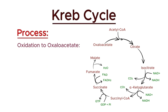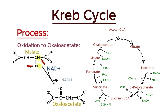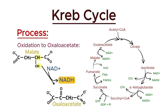In the eighth and final step of the Krebs cycle, malate is oxidized to regenerate oxaloacetate. This reaction is catalyzed by the enzyme malate dehydrogenase. During this process, malate is oxidized and NAD+ is reduced to NADH. The regeneration of oxaloacetate is crucial as it allows the Krebs cycle to continue by providing the starting molecule that combines with acetyl-CoA in the first step. This step also produces another NADH molecule, which will be used in the electron transport chain to generate ATP.